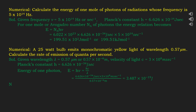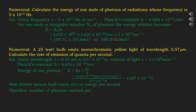Now, 25 watts means the bulb emits 25 joules of energy per second. Therefore, the number of photons emitted per second = 25 / (3.487 × 10⁻¹⁹), which comes out to be 7.17 × 10¹⁹ photons per second.